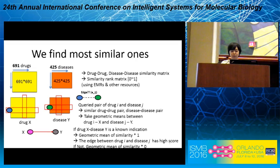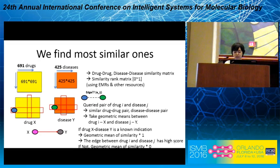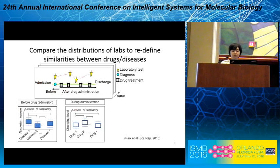We detect drug X and disease Y as the most similar known pair. The geometric value is multiplied by one and the edge score goes high. If not, we multiply by zero and the final edge score goes to zero. So in this pipeline, the similarity matrix is the key feature. I will explain how we compare the distribution of labs to define the similarity between drugs and diseases.